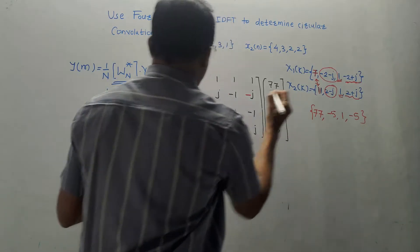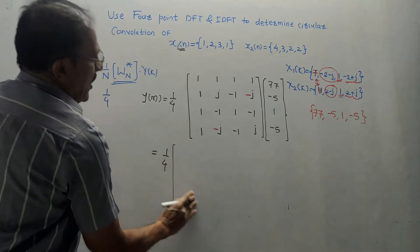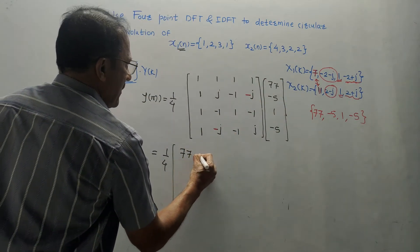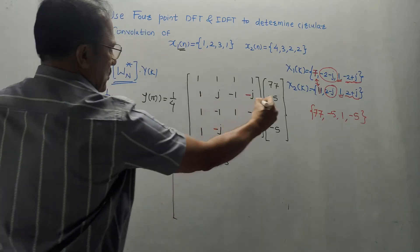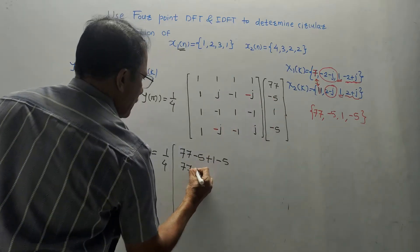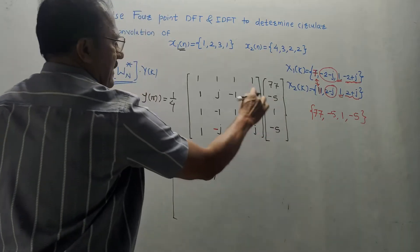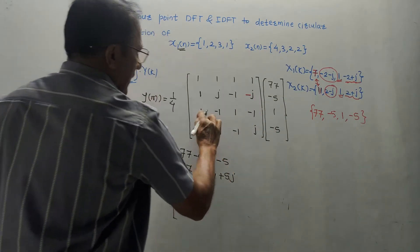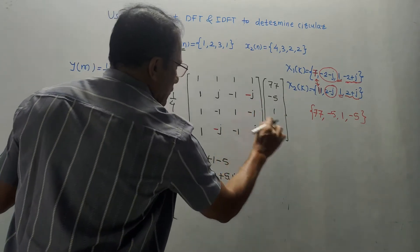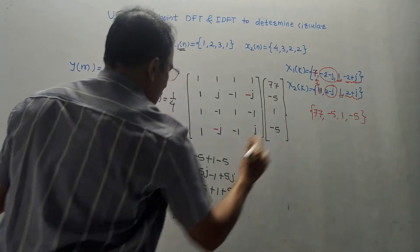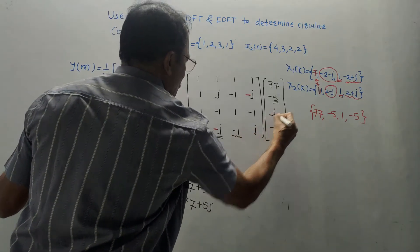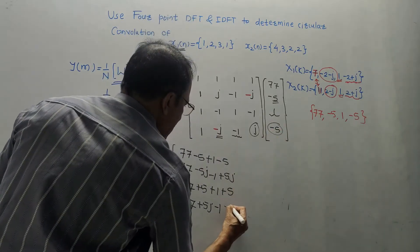Performing the matrix multiplication: first row gives 77 + (−5) + 1 + (−5) = 68. Second row: 77 − 5j − 1 + 5j = 76 (the j terms cancel). Third row: 77 + 5 + 1 + 5 = 88. Last row: 77 + 5j − 1 − 5j = 76 (j terms cancel again). In the final answer there must be no j terms — verified.